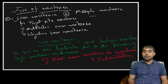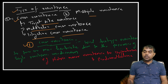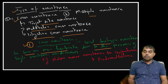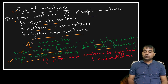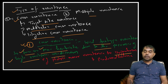Under cross resistance, there is target site cross resistance and negative cross resistance. Cross resistance occurs when a weed biotype is resistant to two or more herbicides due to a single resistance mechanism. A very good example is that Phalaris minor is now resistant to both isoproturon and pendimethalin because of cross resistance.